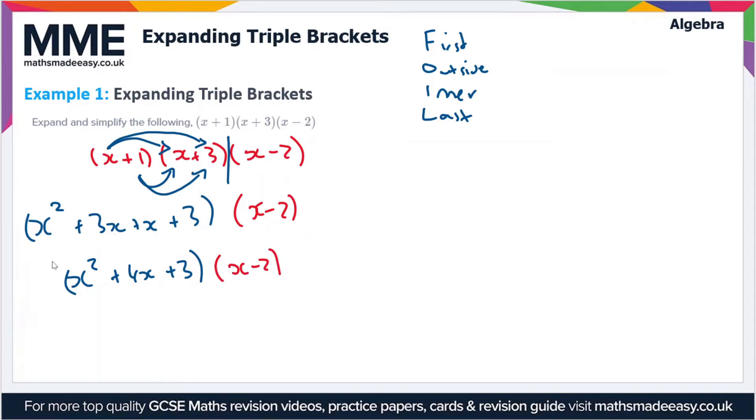So we just extend the FOIL method here and do more or less the same thing. We're going to multiply this x² by x first of all, so that's going to be x³. Then we're going to multiply the x² by -2 to give us -2x². Then we multiply the 4x by the x to give us 4x², and then we do the same and multiply it by the -2 to give us -8x.